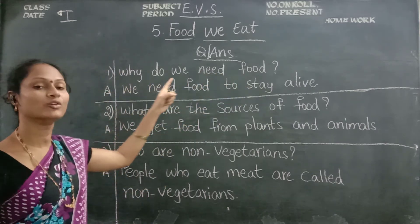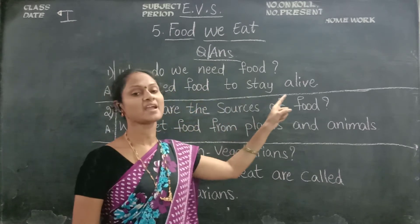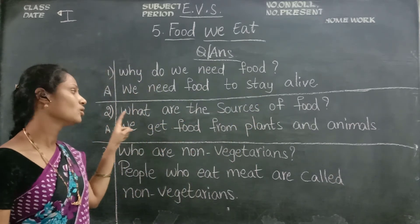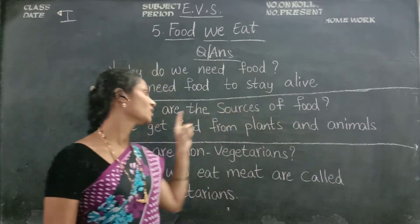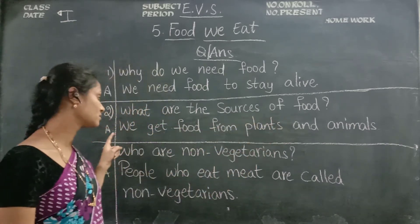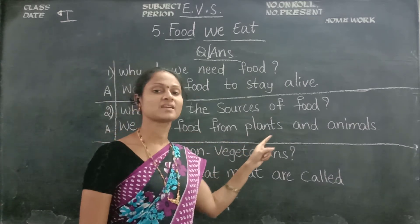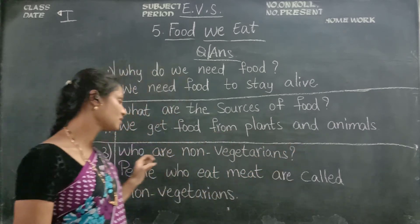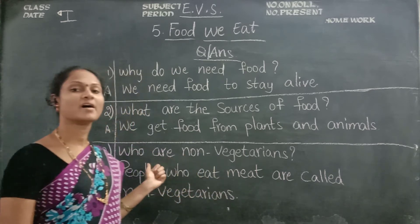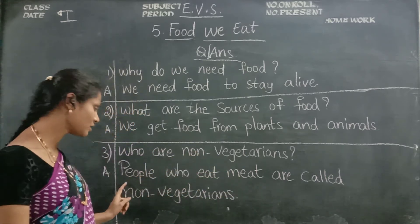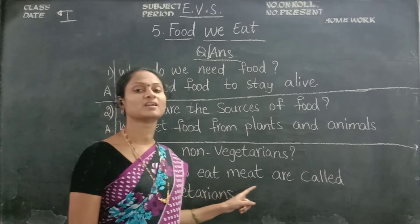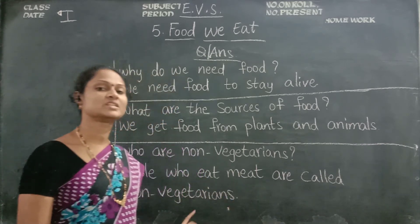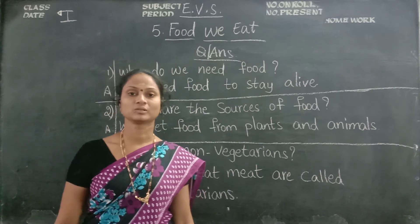People who eat meat are called non-vegetarians. Now see, children. Why do we need food? We need food to stay alive. What are the sources of food? We get food from plants and animals. Who are non-vegetarians? People who eat meat are called non-vegetarians. Ok children, read well. Thank you.